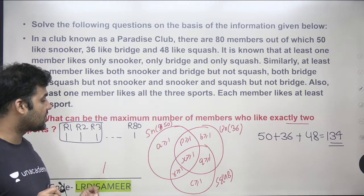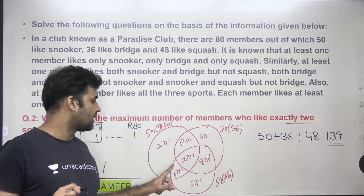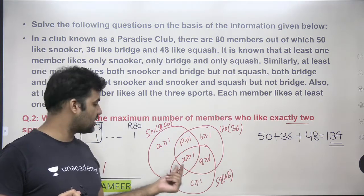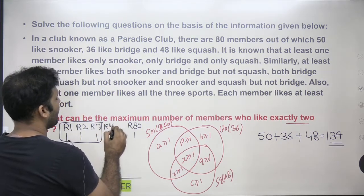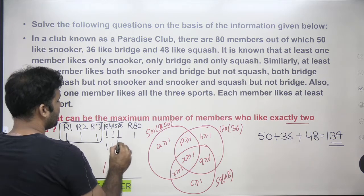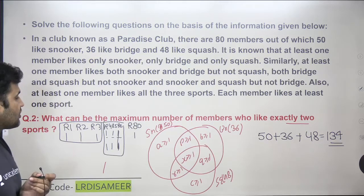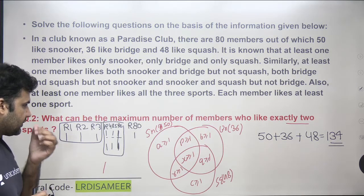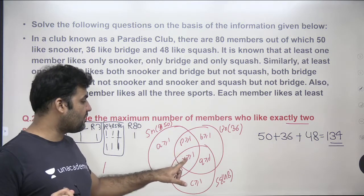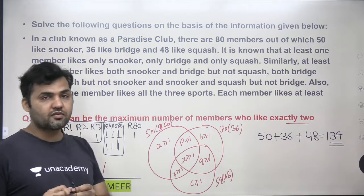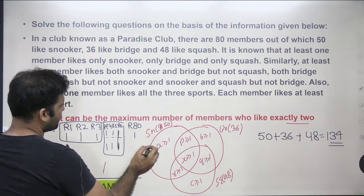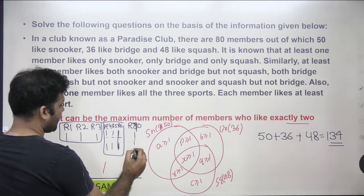I also need to satisfy the condition that each pairwise-intersection region has at least one member. That means I need one person with two prizes in each of the three pairwise regions. So role number four, role number five, and role number six are three members awarded with two prizes — they are the ones coming into those pairwise-intersection regions. I also need to satisfy the condition that the triple-intersection region has at least one member, so role number seven gets three prizes and occupies that region.